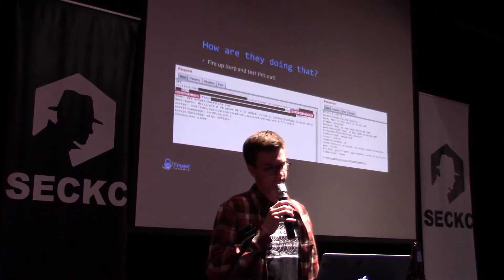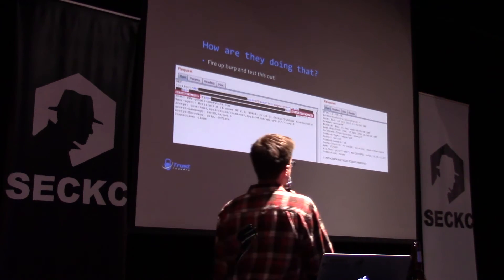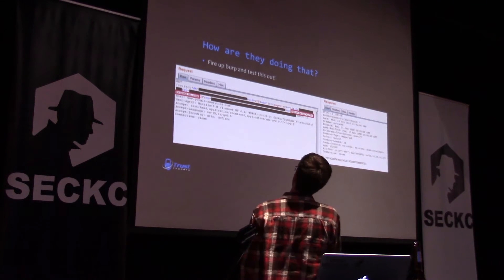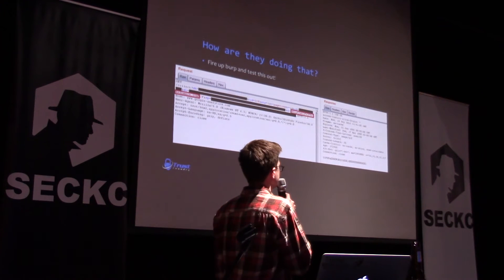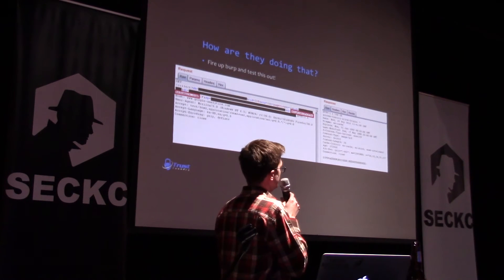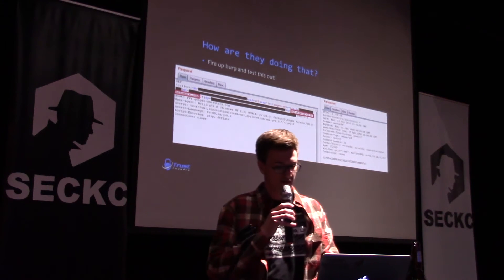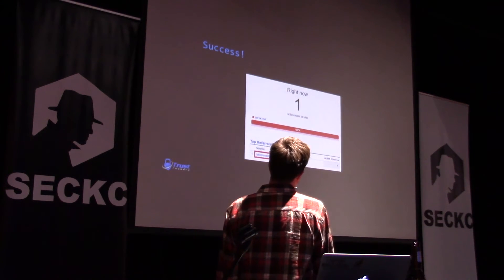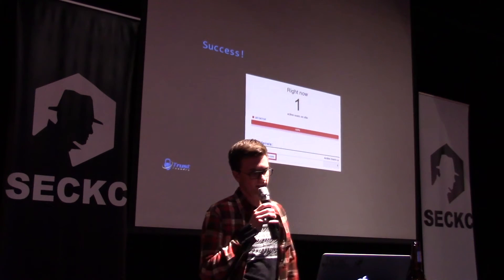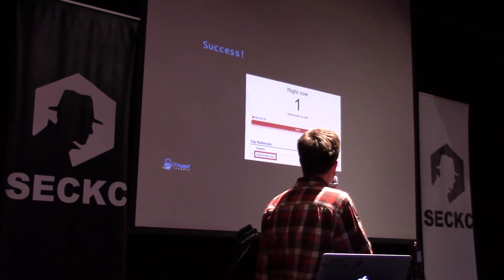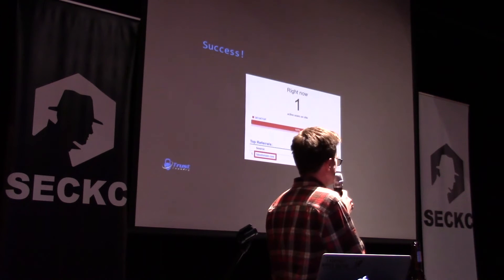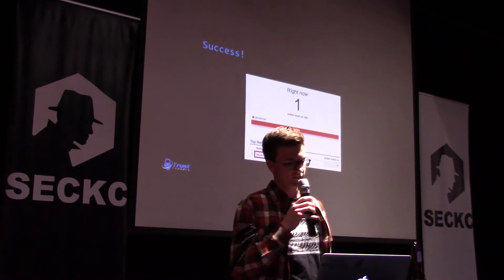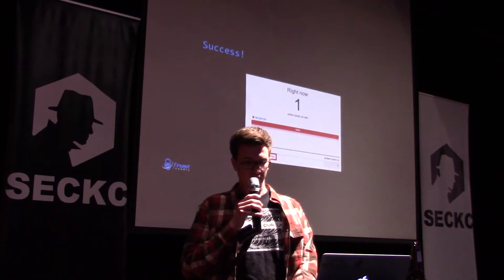So I opened up Burp, threw a request together saying there's some traffic coming from fakedomain.com, sent that off, and Google gave me some gobbledygook back — but it was a 200, so it seemed good. I logged into my Google Analytics and sure enough it said there's a user on my site right now from fakedomain.com. So you can spoof it — that's pretty cool. But it's not really useful in and of itself; you've got to be able to do it a lot and really fast. And so that leads to the inevitable, which is automation.